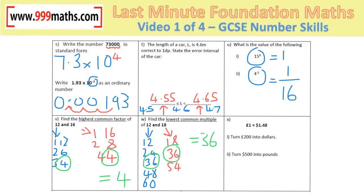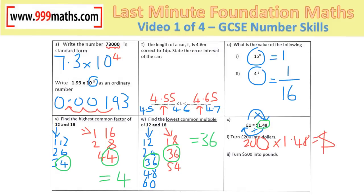Exchange rates: put on the loops — multiply to go from pounds to dollars, and divide to go from dollars to pounds, always using the given rate. The first part requires turning £200 into dollars: pounds to dollars is a multiply. On a calculator the answer is 296 dollars.